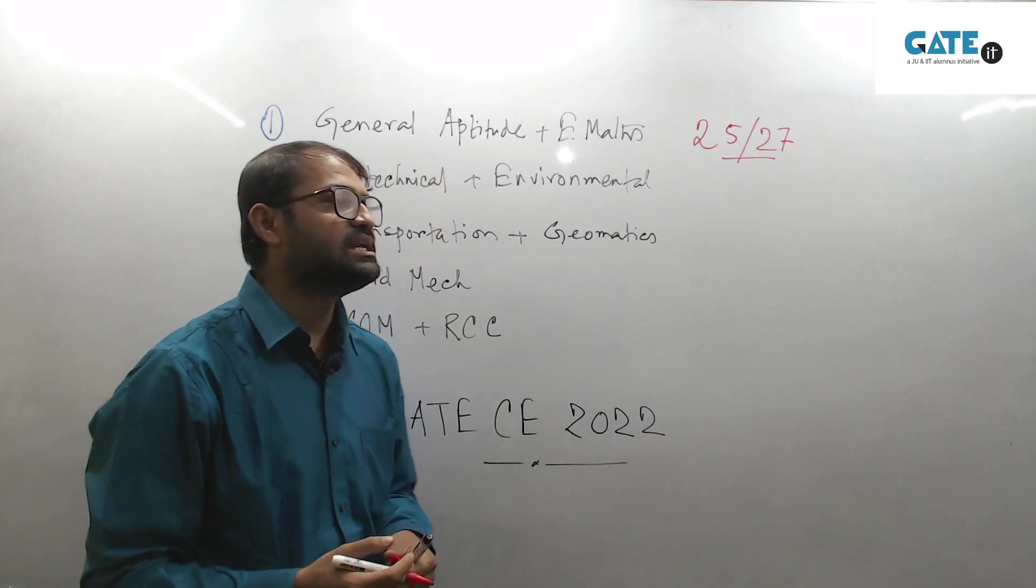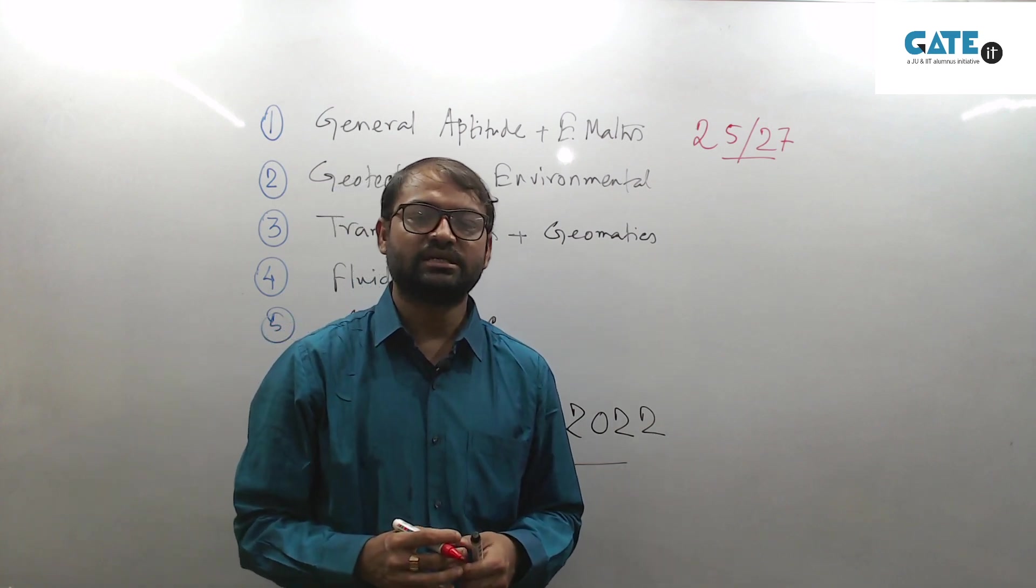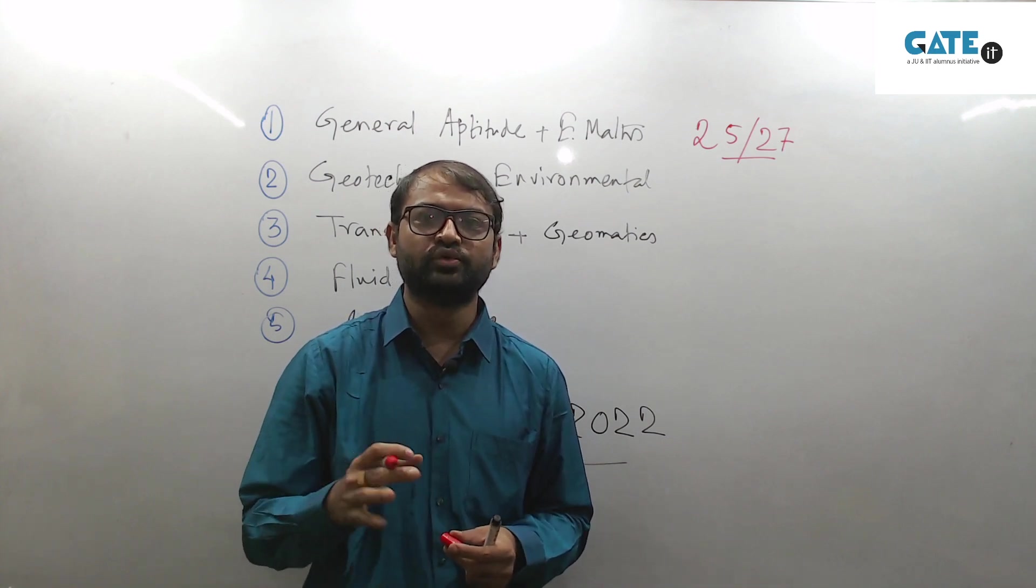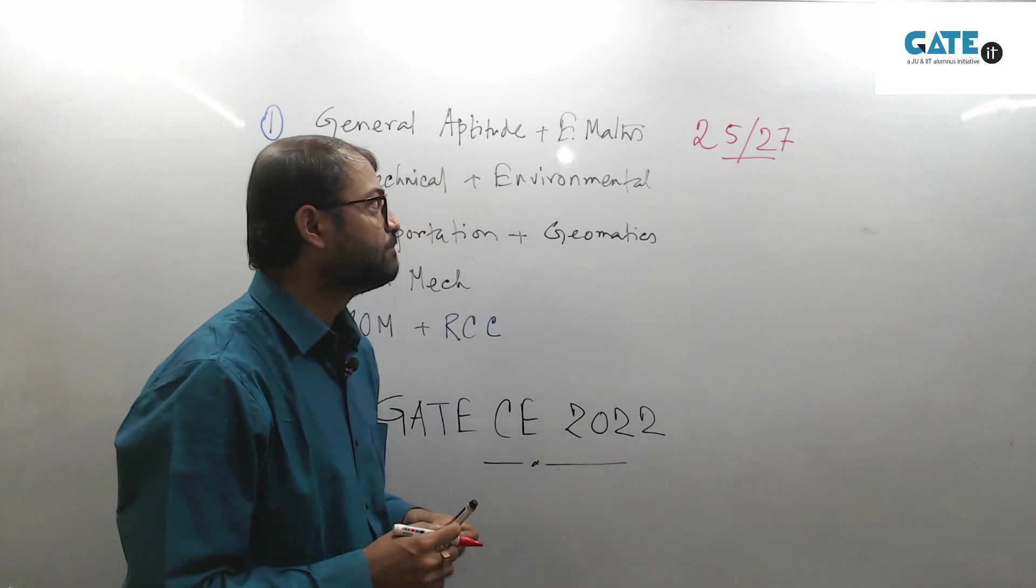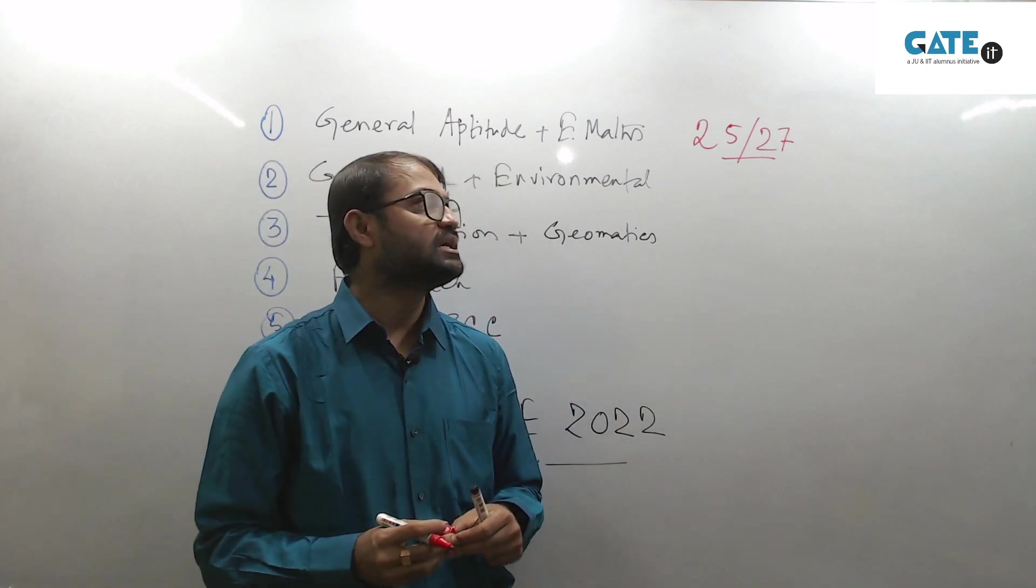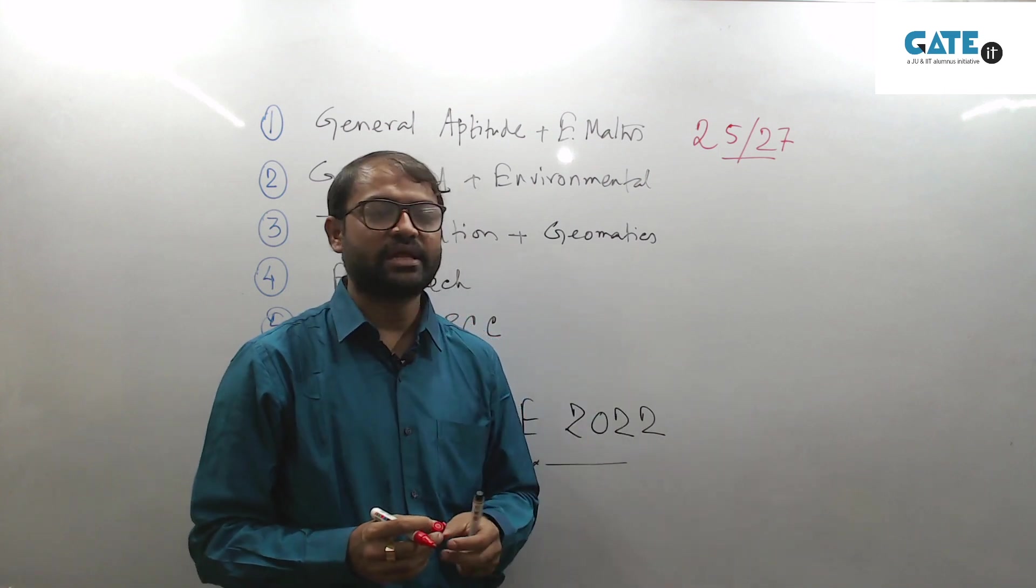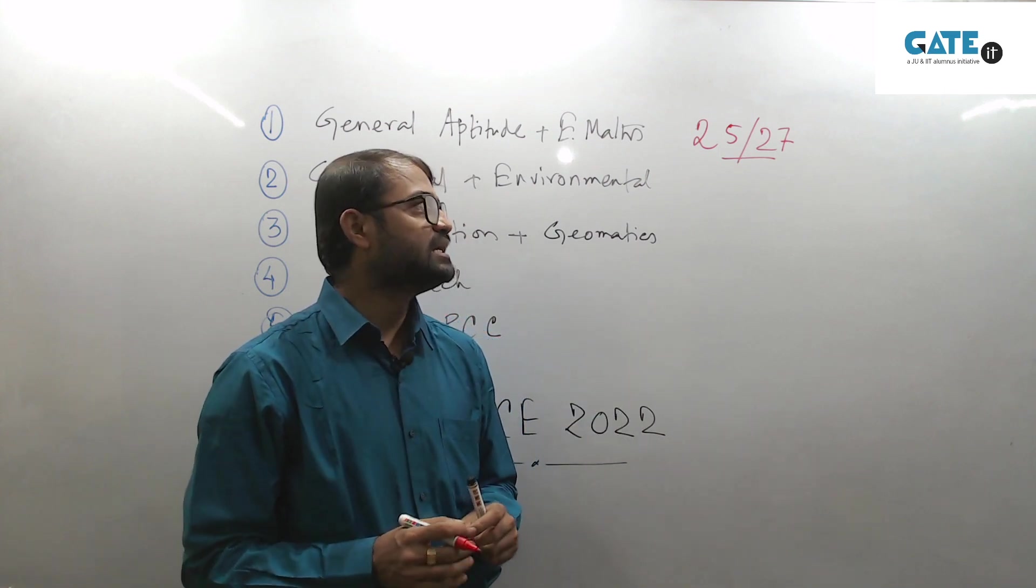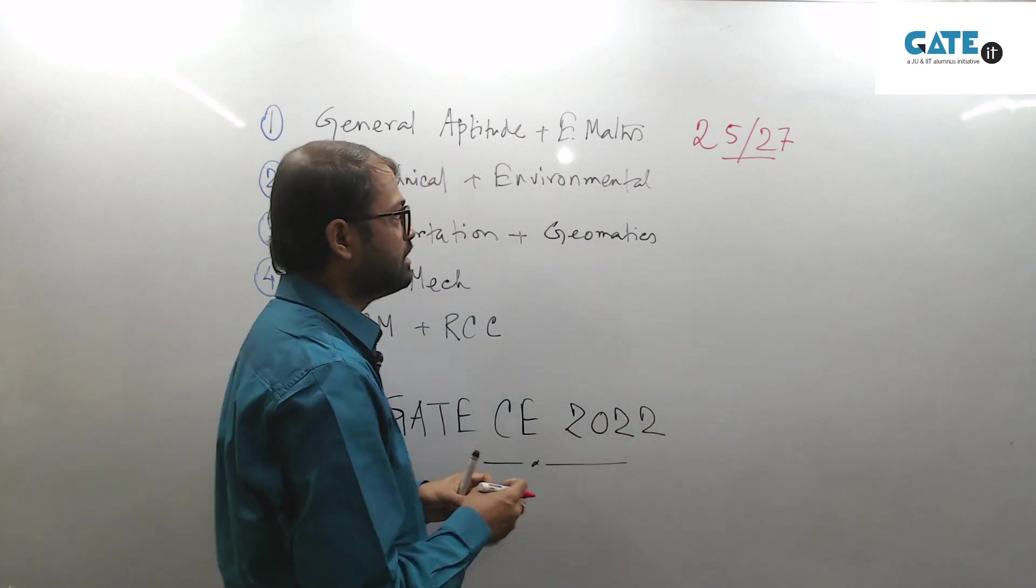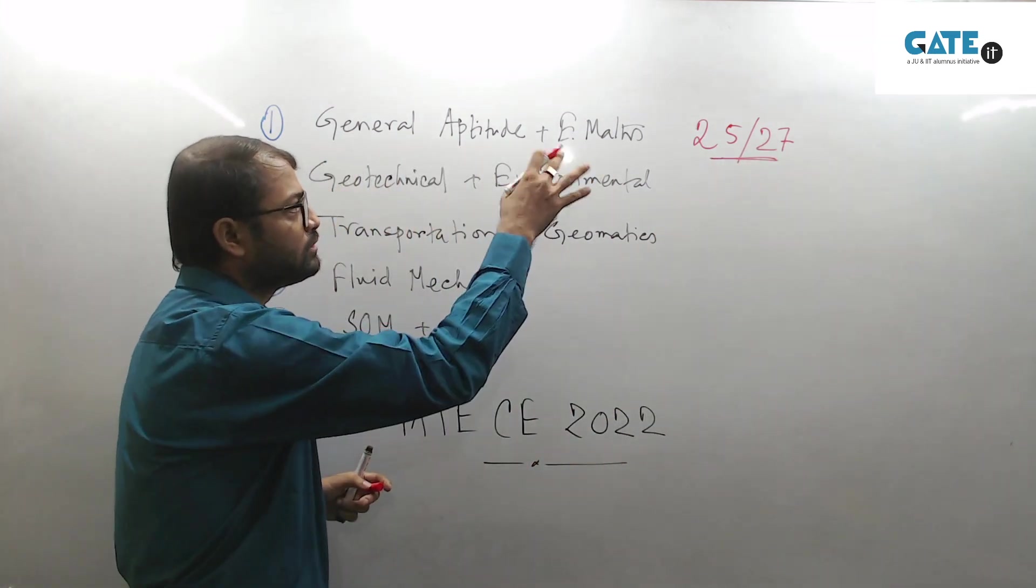We know that general aptitude, the numerical aptitude part, is typically 9th or 10th standard, and the English part is also moderate. You can any day score 3 to 4 marks from that part. Regarding engineering mathematics, if not all the questions, you can still score a lot - you can attempt a lot of questions which are moderate. For civil engineering paper, engineering mathematics is easy to moderate level. So this is one of the major focus you have to keep in mind.